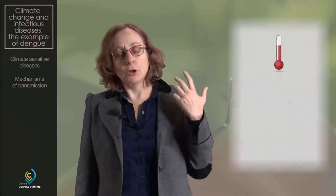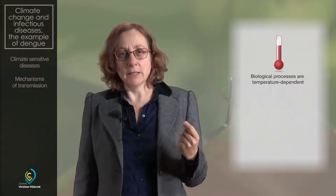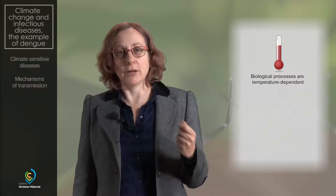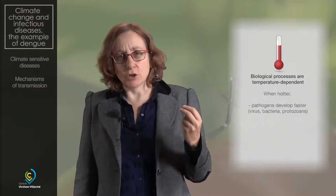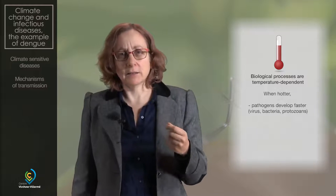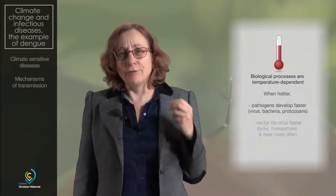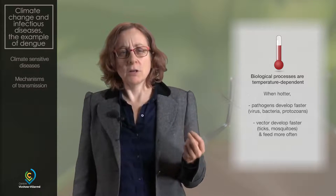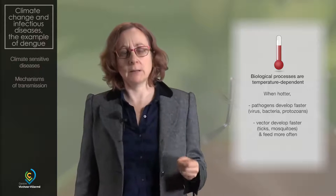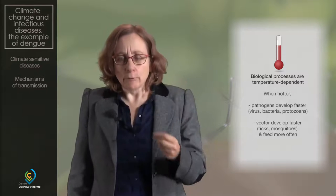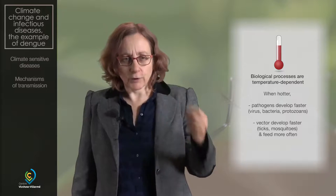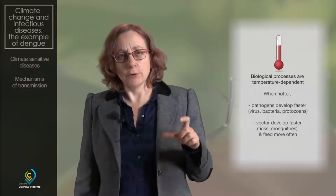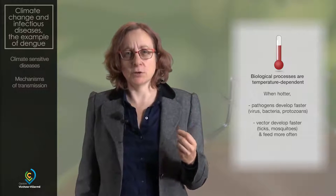Through which mechanisms is the transmission happening? When we look at temperature, many biological mechanisms occur more rapidly when the temperature is higher. The pathogen — that can be the virus or the parasite — often develops more rapidly with higher temperature. The vector itself — the mosquito or the tick — also develops more rapidly and is more active, so it feeds more often on the host, the human being. All this implies that transmission will happen within a shorter period of time, and therefore the probability of disease transmission is going to increase.